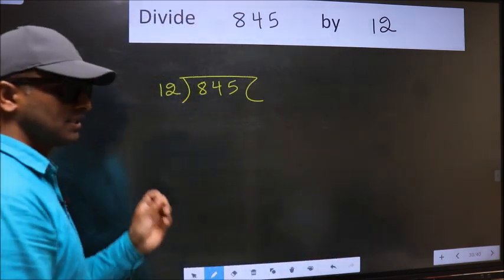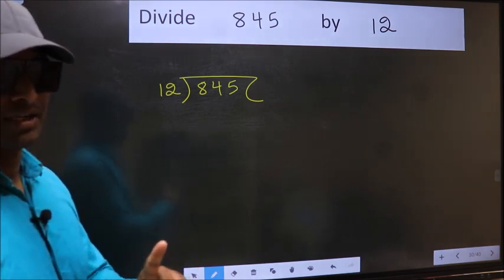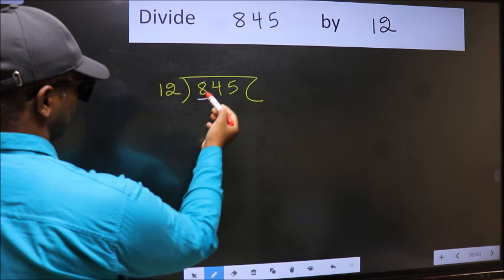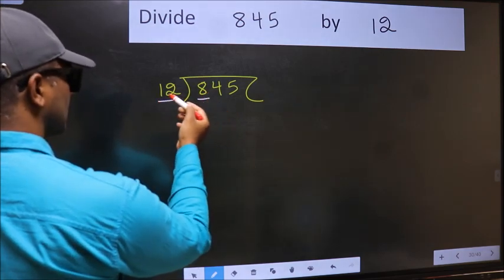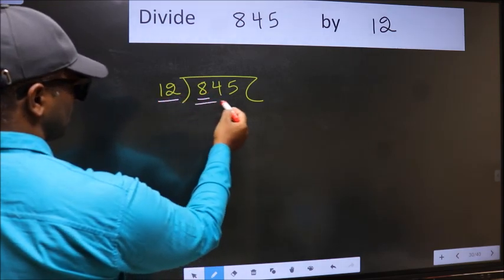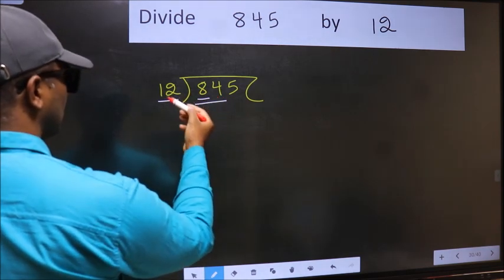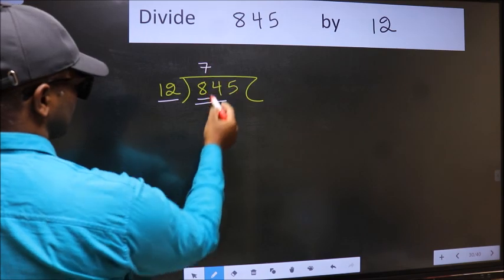This is your step 1. Next, here we have 8 and here 12. 8 is smaller than 12, so we should take 2 numbers: 84. When do we get 84 in the 12 table? 12 times 7 is 84.